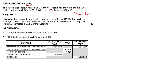VAT is now 15% — please take note of that. This is an older example, so for the purposes of this question we are going to utilize the 14% VAT rate given. But in your paper, your examination, the VAT rate that will be given is 15%. So calculate the amount receivable or the amount payable to SARS for VAT on the 31st of August 2016.